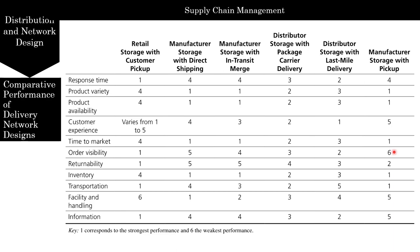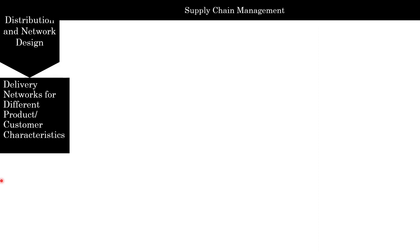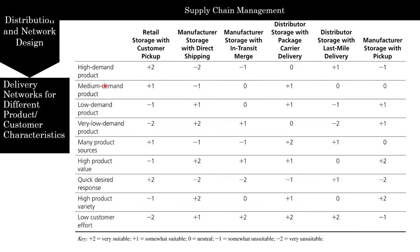Only niche companies end up using a single distribution network. Most companies are best served by a combination of delivery networks, and the combination used depends on the product characteristics and the strategic position of the firm. Looking at the suitability of different delivery designs in various situations: plus two is very suitable, minus two is very unsuitable.